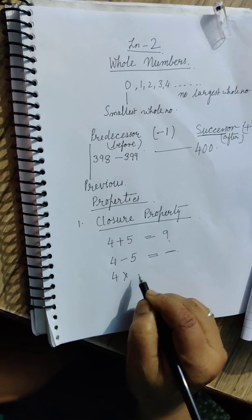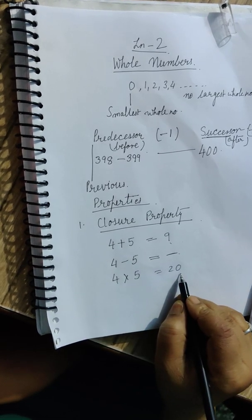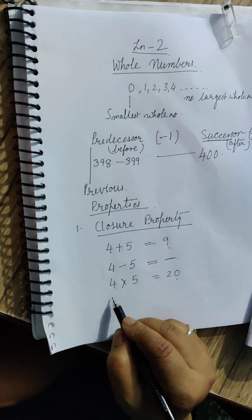When we multiply 2 whole numbers, the answer is always a whole number. So closure property is satisfied in multiplication also.